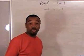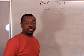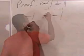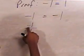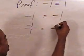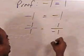We know negative 1 equals negative 1, of course. I'm going to make this into a fraction. Negative 1 is the same thing as negative 1 divided by 1. And negative 1 is also the same thing as 1 divided by negative 1.